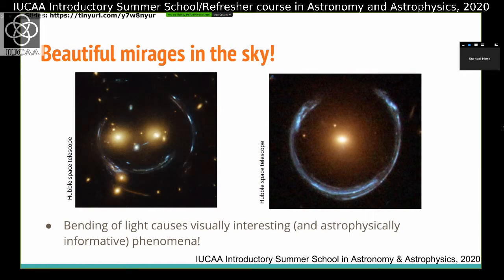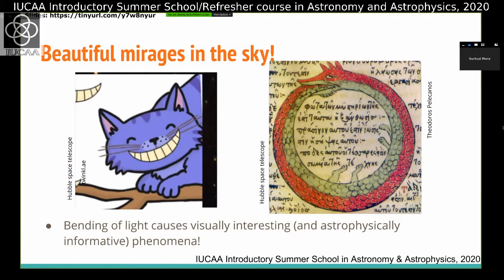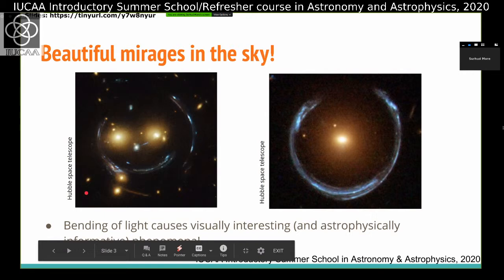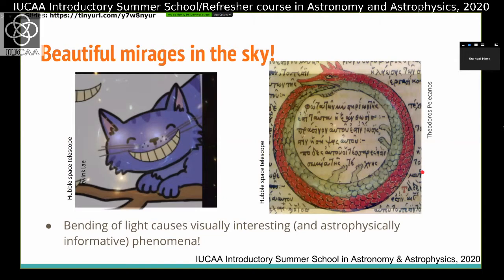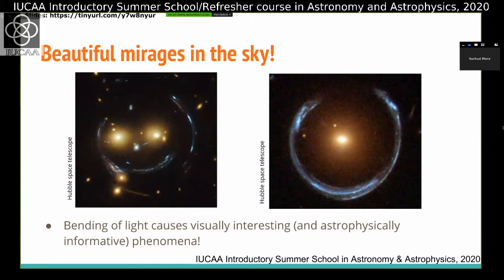Bending of light is what causes this — these are really visually interesting. People give them names: the one on the left is called the Cheshire Cat system, like the character in Alice in Wonderland whose only grin remains. The one on the right looks as if a serpent is eating its own tail. These are all caused by bending of light, and they are not just visually appealing — they are also astrophysically very informative phenomena. You can learn a lot of things by just looking at this.